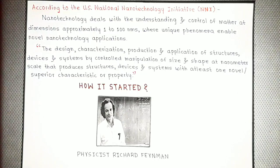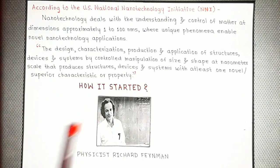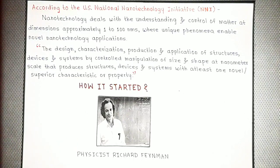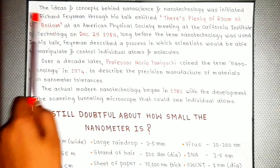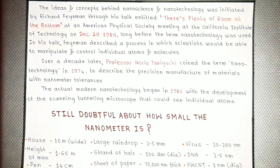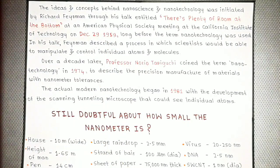Now I am sure your curious mind also wants to know about the origination of this field and how it started. To know this, you need to know famous physicist Richard Feynman, who pioneered the idea of nanotechnology. The ideas and concepts behind nanoscience and nanotechnology were initiated by Feynman through his talk entitled 'There is Plenty of Room at the Bottom,' at an American Physical Society meeting at the California Institute of Technology on December 29, 1959, long before the term nanotechnology was used. In his talk, Feynman described a process in which scientists would be able to manipulate and control individual atoms and molecules.